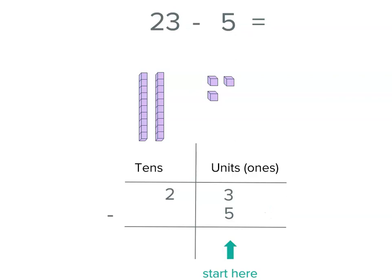Now we always start from the far right, which is the units place in this example. 3 units minus 5 units. 1, 2, 3. At the moment I can't subtract 5 from 3.